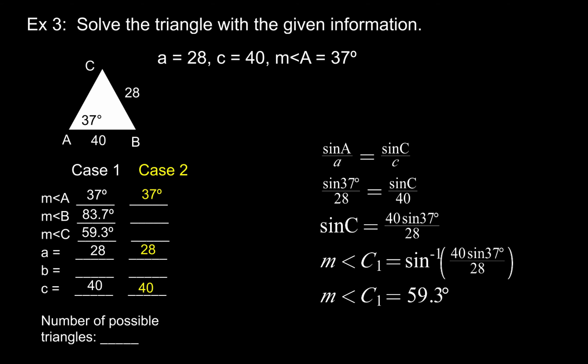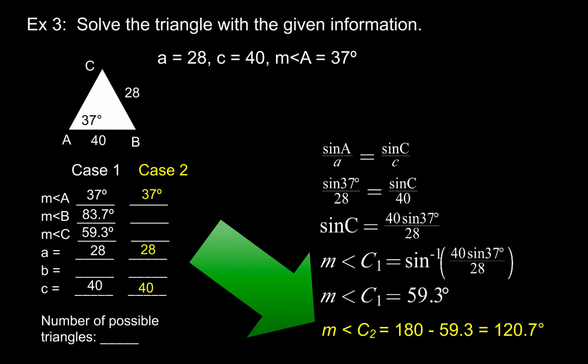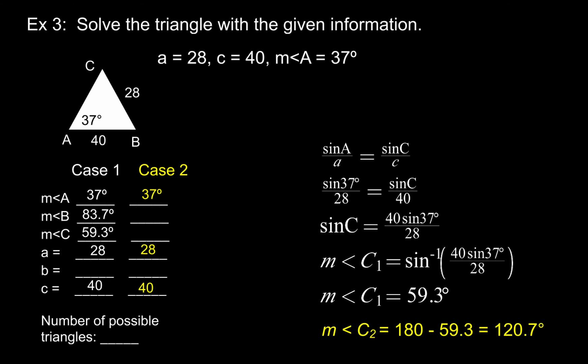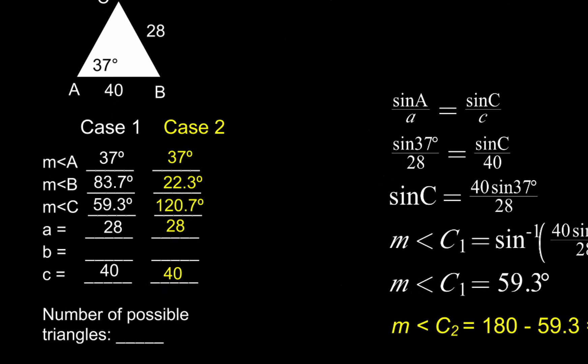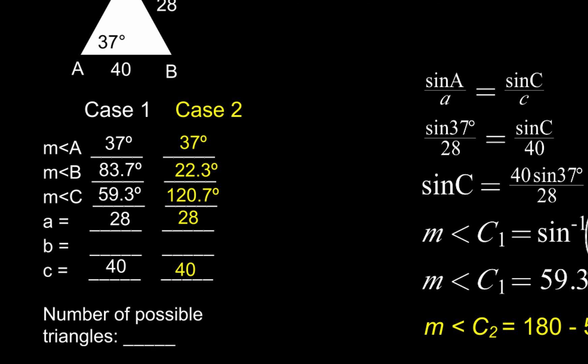Now I want to see if I have a second triangle. I'm going to take the measure of angle C that I found and subtract that value from 180 to find its supplement. When I do that I get 120.7 degrees, so I'll fill that in my chart for case 2. Taking those two angles for case 2 — 37 degrees and 120.7 degrees — if I add them up and subtract their sum from 180, I get the other possibility for angle B. Since their sum is less than 180, that works out to 22.3 degrees for the other possibility for angle B.